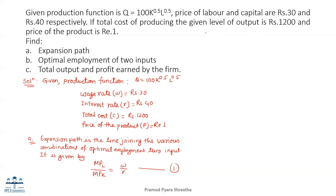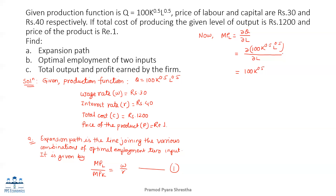That is equation 1: MPL divided by MPK. MPL is the partial derivative of Q with respect to L. Differentiating Q equals 100K to the power 0.5 L to the power 0.5 with respect to L, treating K as constant, gives MPL equals 50 K to the power 0.5 L to the power negative 0.5.